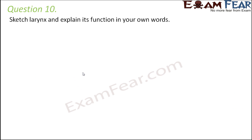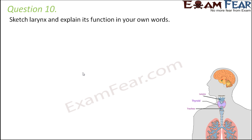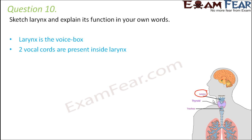Question number 10: Sketch the larynx and explain its function. The larynx is located on the upper part of the trachea. It is called the voice box because it is responsible for the production of voice, which it does by the help of the vocal cords present inside the larynx.